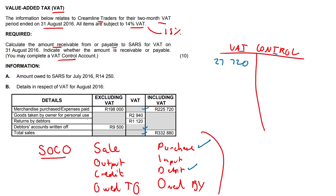Goods taken by owner for personal use. It's not always clear how we should apply SOCO, so we always need to go back to the root transaction — what happened initially? Initially this was a purchase, so it was on the debit side. But now we're taking it out of the business, so we reverse it and it goes to the sale side — it becomes a credit. That amount is 2,940. Also, the amount owed to SARS goes on the credit side: 14,250.